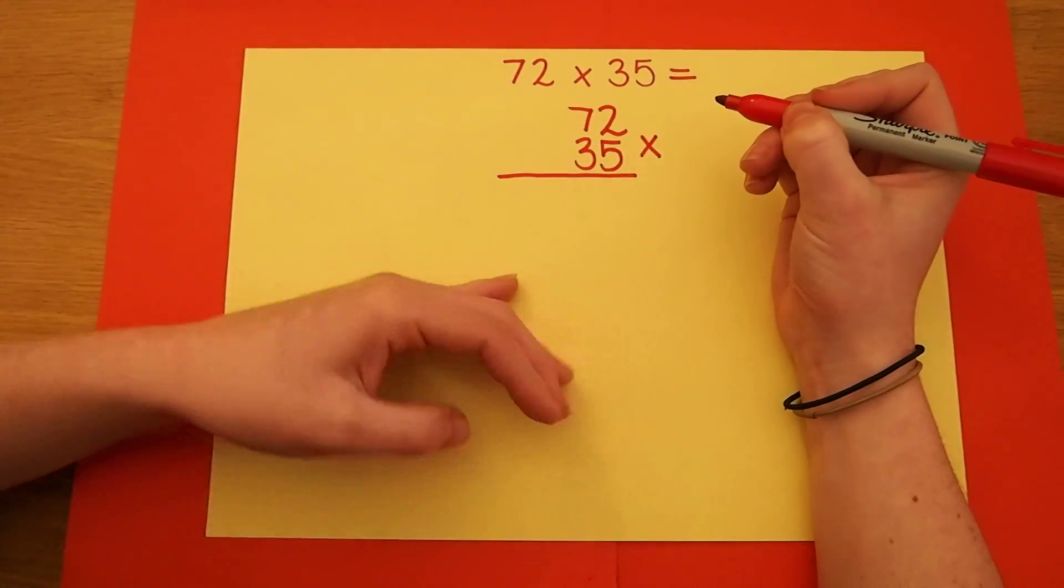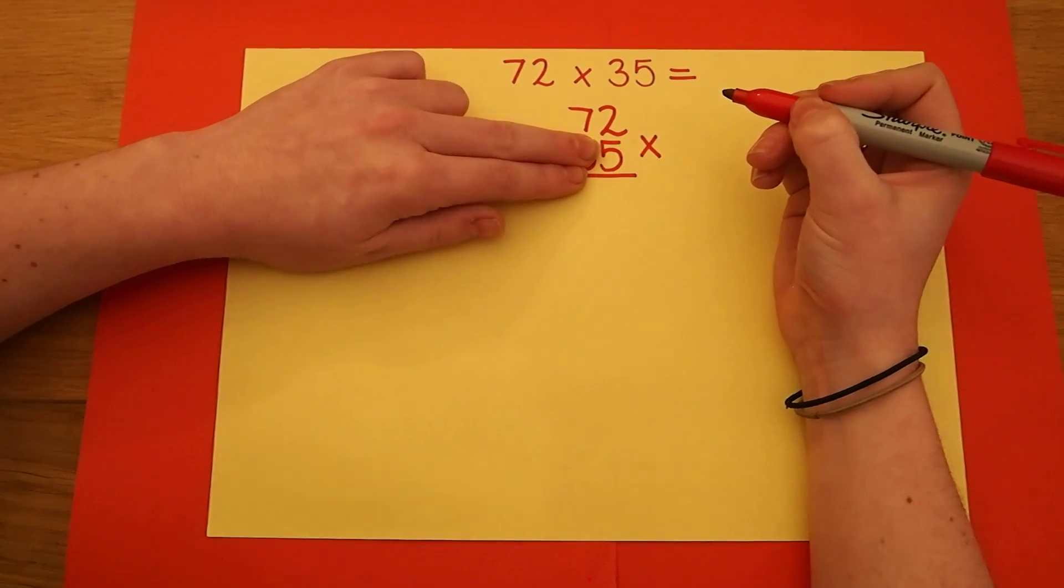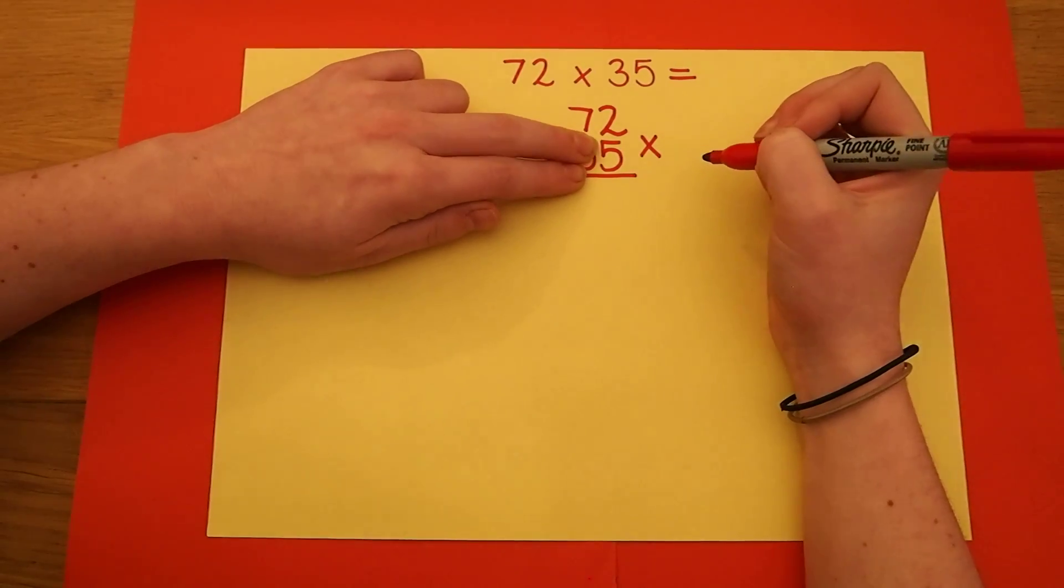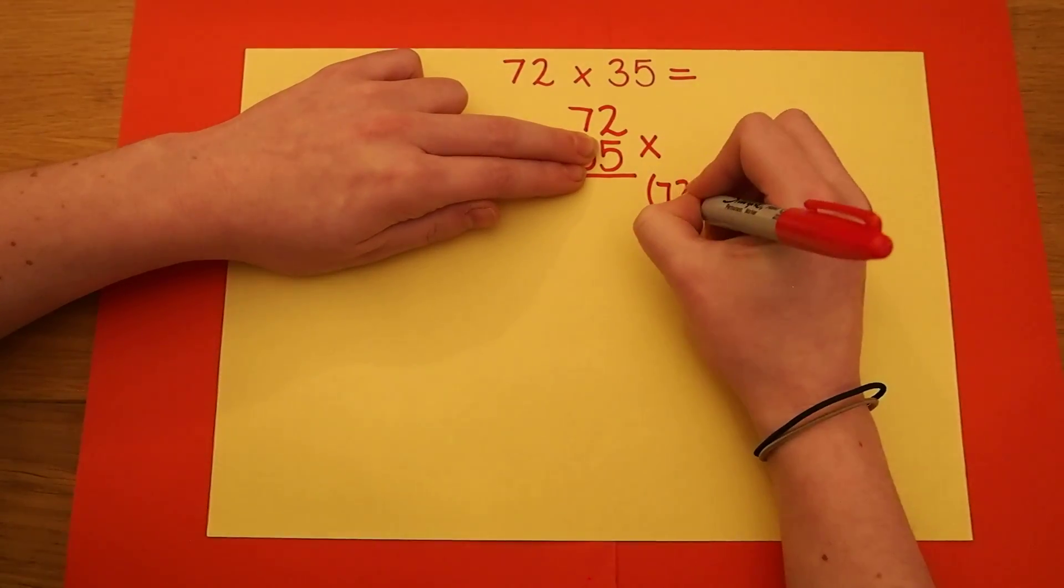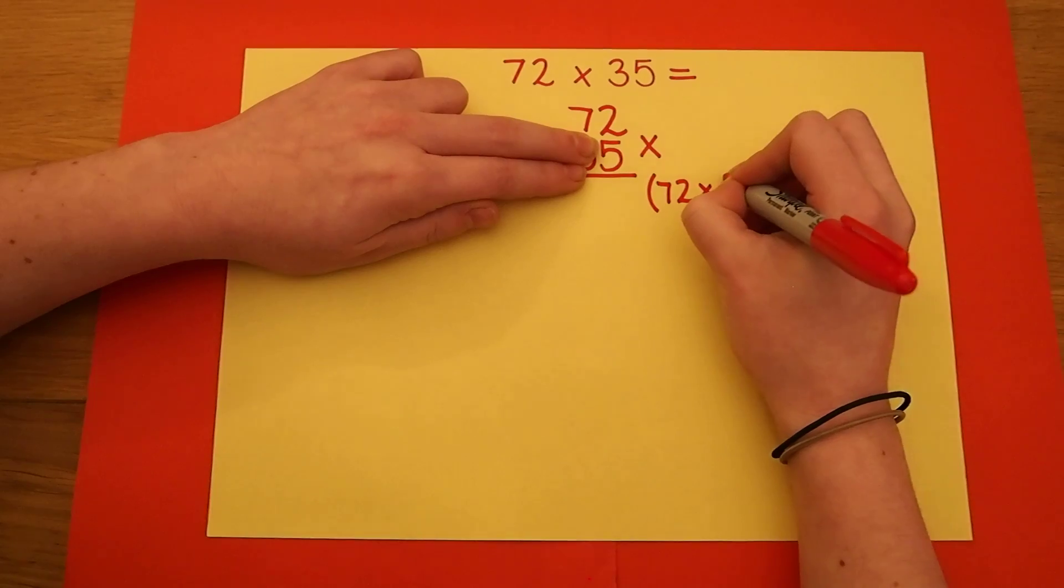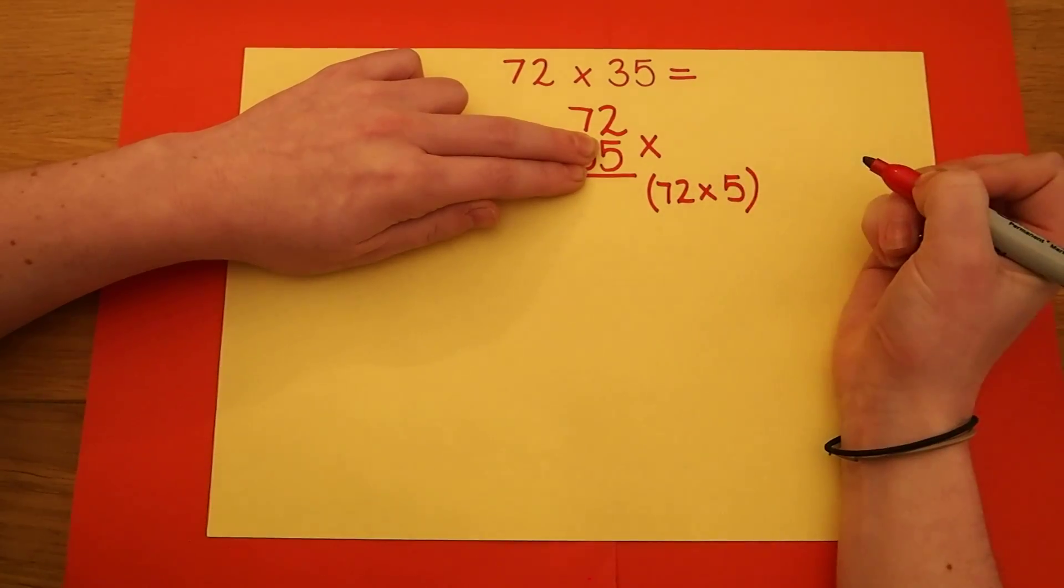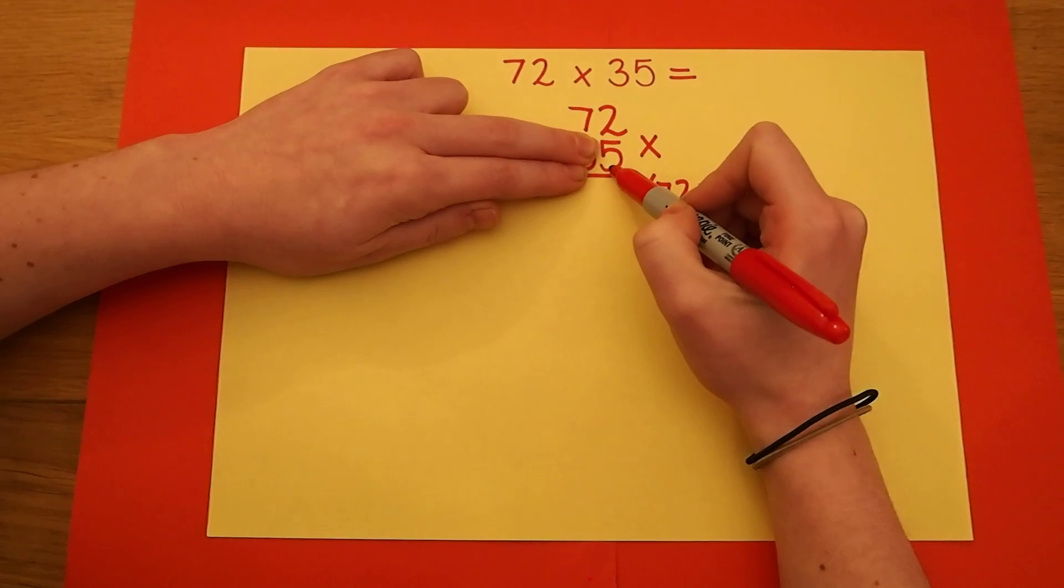The first step, I imagine that 3 isn't there and continue with my short multiplication method. I'm going to write it in brackets at the side so I remember what I'm doing. So I'm doing 72 multiplied by 5.